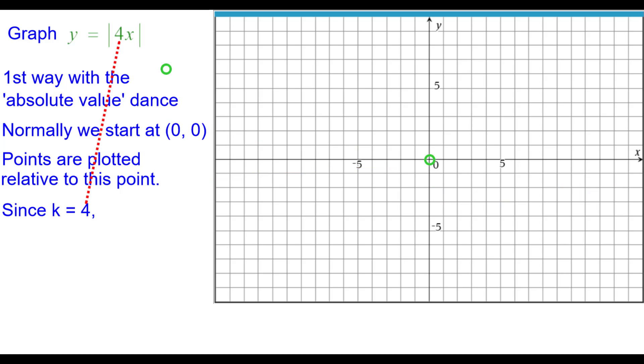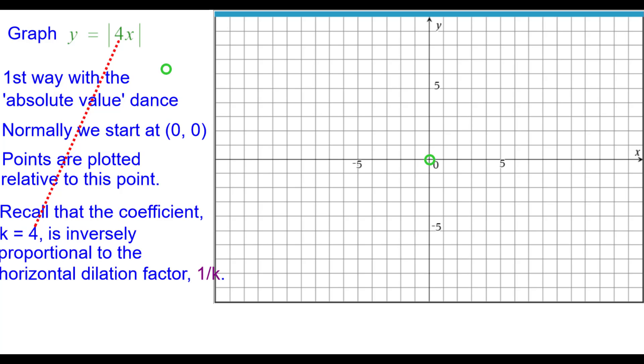Since k equals 4, the graph is narrower than the parent function, the absolute value v. And recall that the coefficient is inversely proportional to the horizontal dilation factor which is 1 over k or in this case 1 fourth.